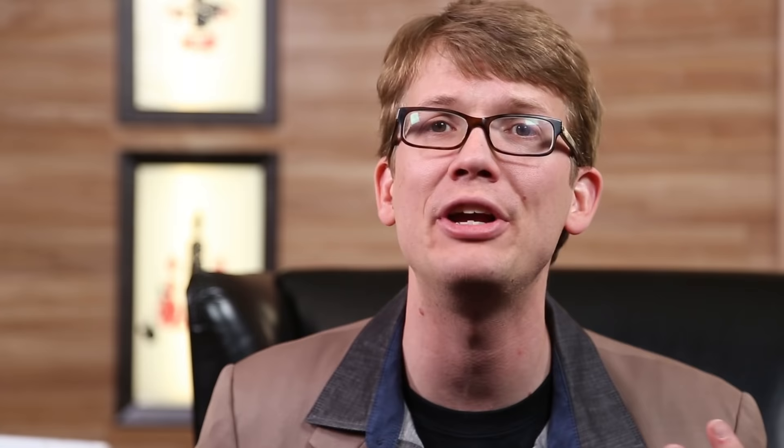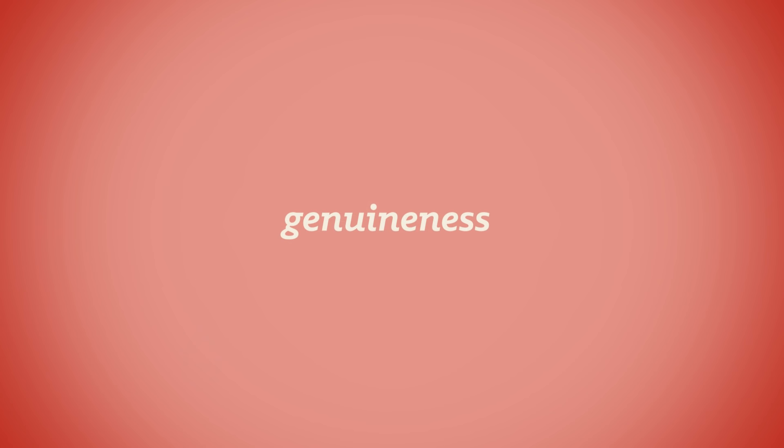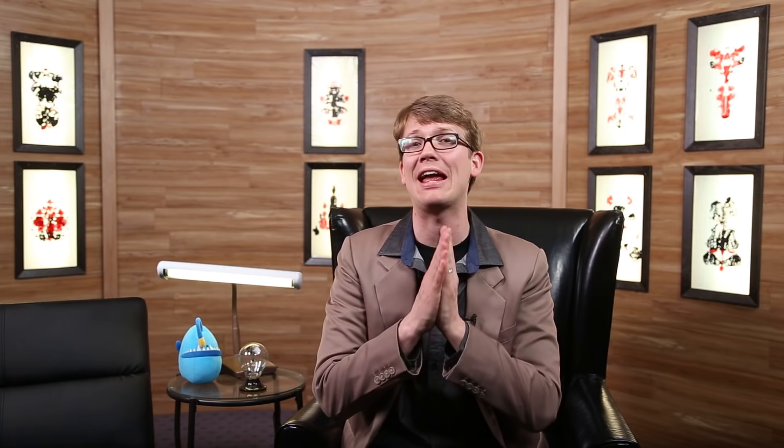Carl Rogers was another pioneer of humanistic theory who proposed a person-centered perspective on personality. Like Maslow, Rogers believed we're all basically good, so long as we're nurtured in a growth-promoting environment requiring three conditions: genuineness — parents and teachers being transparent and open with their feelings; acceptance — so people won't be afraid to be themselves or make mistakes; and empathy — the ability to share others' feelings and reflect their meanings. Rogers thought of these traits as the nutrients required to make a personality grow into a healthy self-concept — that mix of thoughts and feelings that answer the fundamental question: who am I?